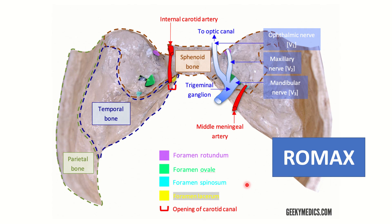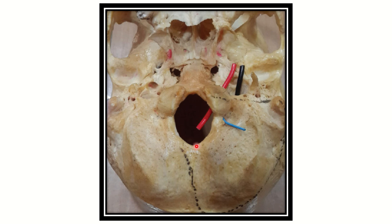Through the foramen rotundum the maxillary nerve passes, and through the foramen ovale the mandibular nerve passes. There is a useful mnemonic for foramen rotundum: 'RoMax' — Ro for rotundum and Max for maxillary — meaning the maxillary nerve passes through the foramen rotundum. We can also see the internal carotid artery, which passes through the carotid canal. Here we can see the opening of the carotid canal, and through this opening the internal carotid artery passes.